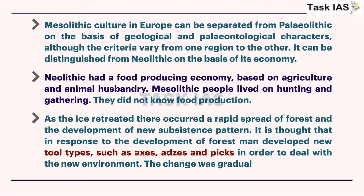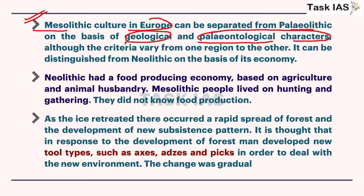Once Mesolithic sites are excavated, there is a need to identify whether the site belongs to the Mesolithic, Paleolithic, or Neolithic period. Mesolithic cultures in Europe can be separated from Paleolithic on the basis of geological and paleontological characteristics - by demarcating different layers using the principle of stratigraphy as well as study of different kinds of fossils. Criteria vary from one region to another due to different geographical conditions.